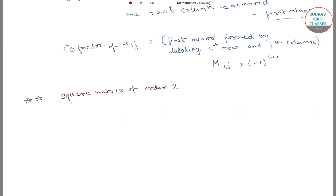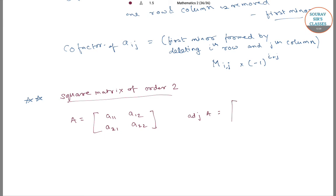For a square matrix of order 2, the adjoint is obtained by interchanging the diagonal elements and changing the signs of the off-diagonal elements. For example, if A equals [a11, a12; a21, a22], then adjoint of A equals [a22, -a12; -a21, a11].